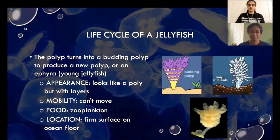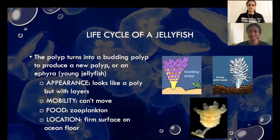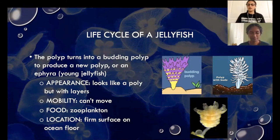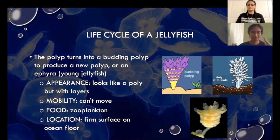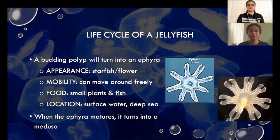The polyp then turns into a budding polyp, where it will either divide to produce a new polyp or it will produce an ephyra, which is a young and immature jellyfish. As you can see in the diagram and image, it looks just like a polyp but it has more layers and more tentacles. Just like the polyp, it also can't move because it's attached to a surface. The budding polyp also eats zooplankton and sits on the ocean floor.